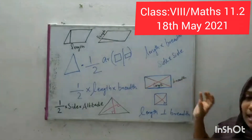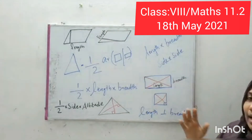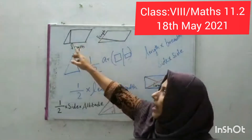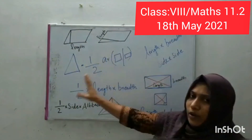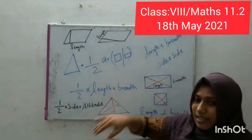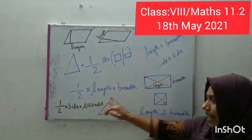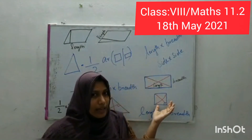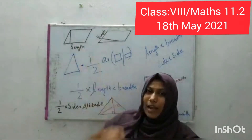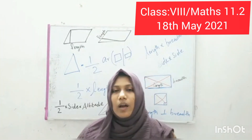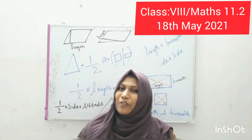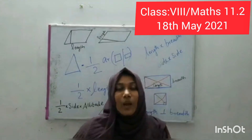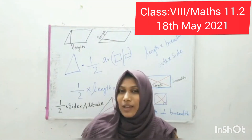For a rectangle, length into breadth. The same formula for a square: side into side, because length and breadth are same. For a parallelogram, the equation is length into breadth, where length is one side and breadth is the perpendicular to that side. For a triangle: half into one side and the altitude to that side. Do the activity by taking a rectangle or a square of your choice. Find out the triangular-shaped objects and parallelogram-shaped objects we use in our daily life. We will catch you at the DCS time. Thank you.